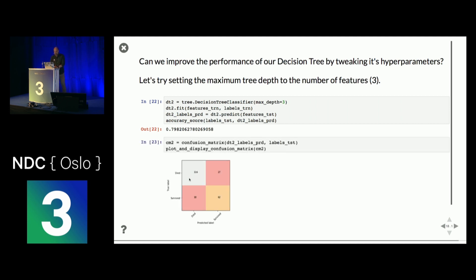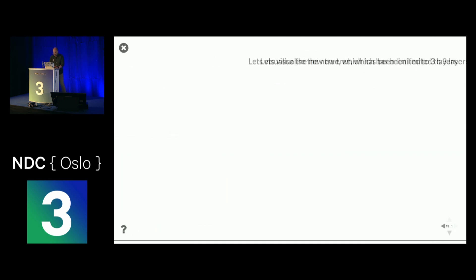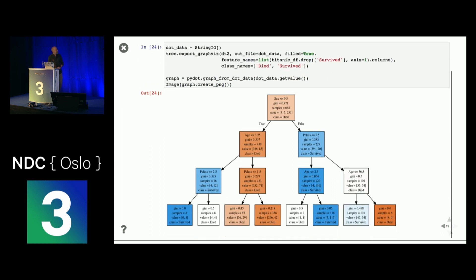Looking at the updated confusion matrix, I correctly predicted 116 died instead of 114, and the biggest change is survivors: I now get 62 right instead of 53. The tree limited to three layers is much easier to follow. What I want you to take away is that by tweaking your hyperparameters and understanding how your algorithm works, you can get better results very quickly. Feature engineering — playing with your data and getting it ready to put into your model — is actually the majority of the work you'll be doing as a data scientist.